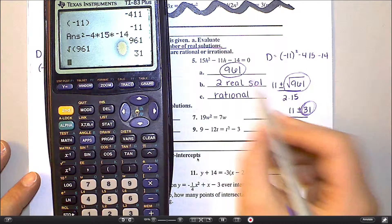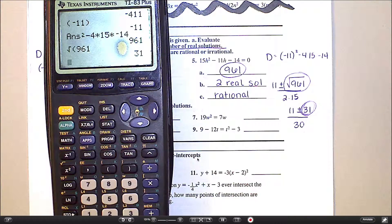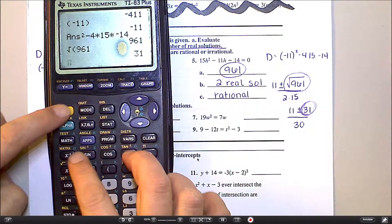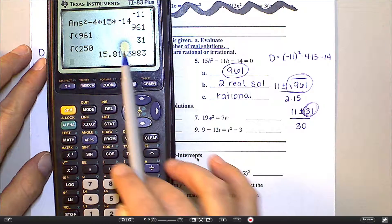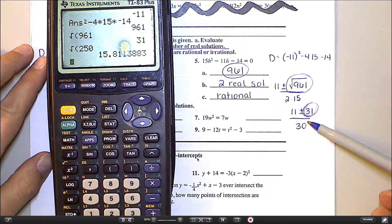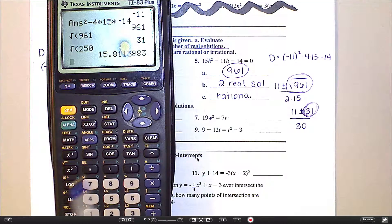Because when I took the square root of 961, I got a nice clean number. Now, let's say you've got a discriminant of 250. When I do the square root of 250, I get this crazy decimal. And that means that crazy decimal is going to make its way into the formula and make my answers be crazy decimals too. And that's when you would say it's irrational.